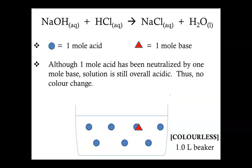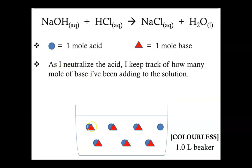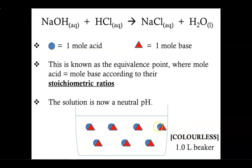So you continue on with the titration, adding more and more base until finally you get to the point where all of the acid is pretty much neutralized except for one left. So long as you have any acid floating around, even if there's not a lot, the solution is still acidic and the indicator remains colorless. By adding the last base, I have neutralized all my acids and my solution is considered to be neutral. This is known as the equivalence point, where the moles of acid and moles of base are stoichiometrically equal — no more sodium hydroxide, no more hydrochloric acid, just the salt and water produced during the neutralization reaction.